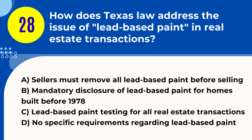Question 28. How does Texas law address the issue of lead-based paint in real estate transactions? A. Sellers must remove all lead-based paint before selling. B. Mandatory disclosure of lead-based paint for homes built before 1978. C. Lead-based paint testing for all real estate transactions. D. No specific requirements regarding lead-based paint. Answer: B. Mandatory disclosure of lead-based paint for homes built before 1978. Explanation: In Texas, sellers are required to disclose the presence of lead-based paint if the home was built before 1978, in accordance with federal law.